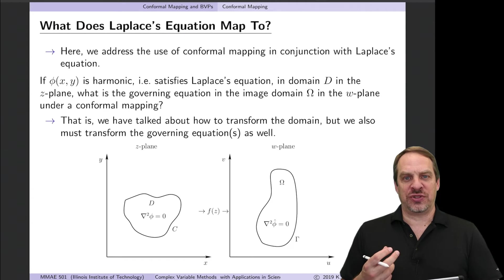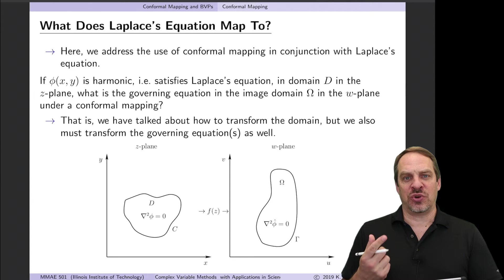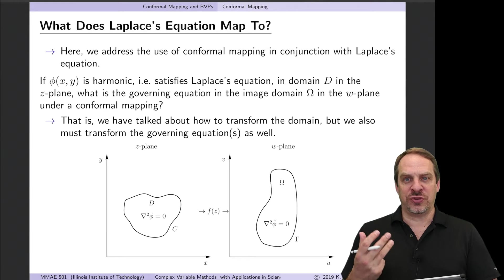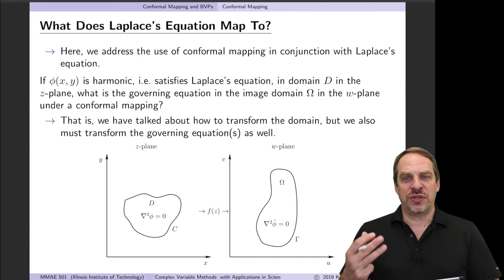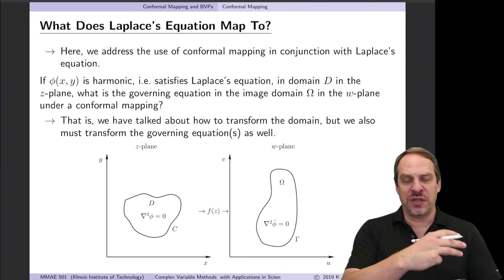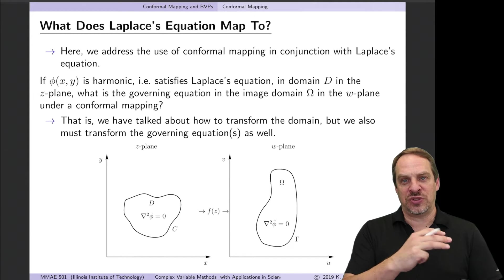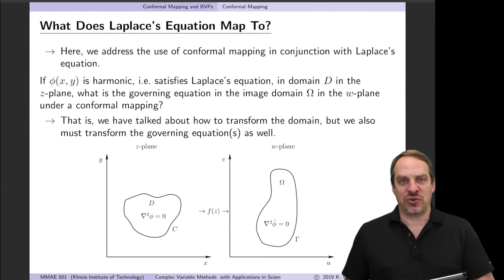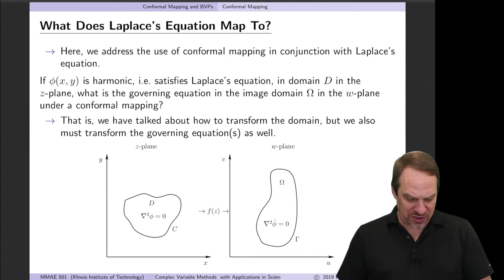We've been looking at conformal mapping considering a series of three questions. The first question was what is the requirement for mapping to be one-to-one. The second question was what is the requirement for mapping to be conformal — turns out they were the same. The third question is what does Laplace's equation transform to when we go from the z-plane to the w-plane. We want to answer that question in this video, and then we'll also do an example of conformal mapping.